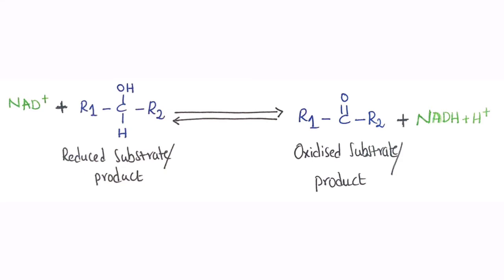In reverse, when the oxidized substrate or product reacts with NADH + H⁺, the hydrogens can be transferred from NADH to the oxidized substrate or product. This converts the oxidized substrate or product into the reduced form, and NADH is converted back into NAD⁺.